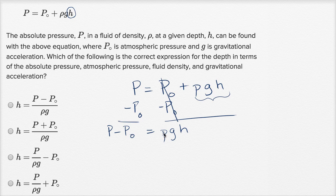And now to solve for h, I can divide both sides by rho times g. So let's do that. Let's divide this side by rho times g, and let's divide this side by rho times g. Rho times g divided by rho times g is just going to be one.